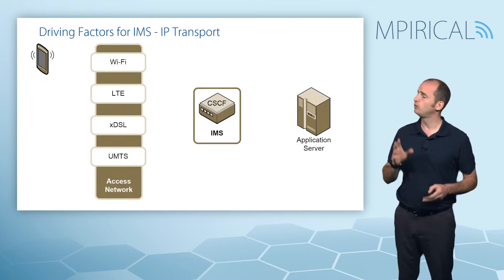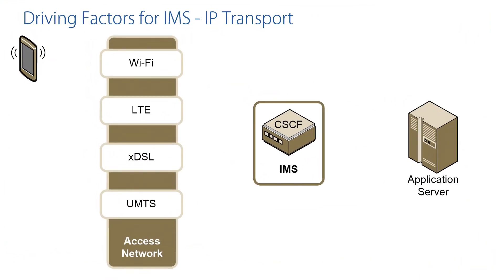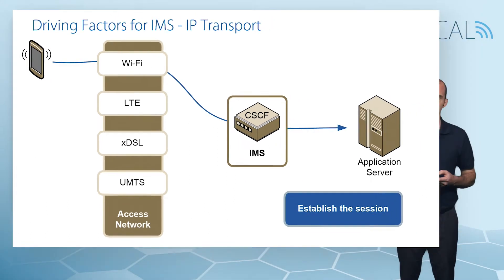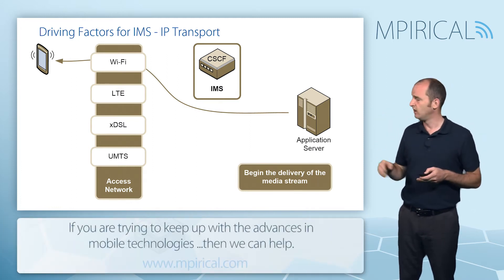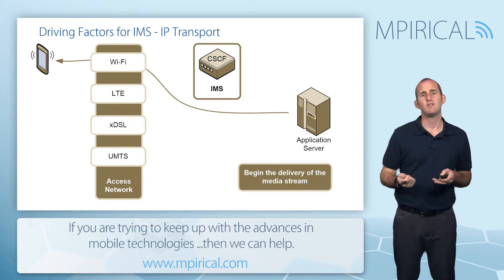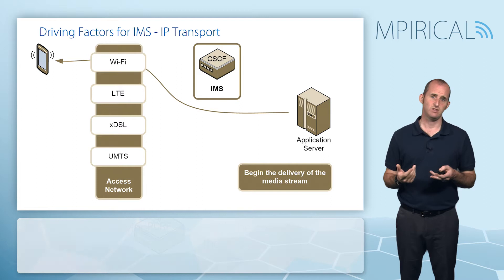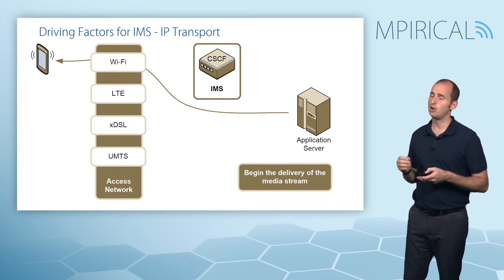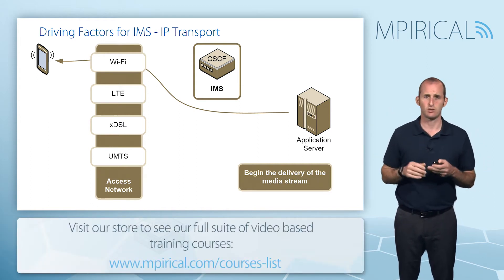A second driver is the whole notion of IP transport, which is essentially what the IMS is based on. In this particular diagram we can see that a particular subscriber has started off a session on Wi-Fi. So that session is being delivered — whatever media might be associated with the session is being delivered across a Wi-Fi access network. Now remember the IMS is IP connectivity access network agnostic. So we could start a session off on Wi-Fi, and notice that at this point the resultant media is not actually flowing through our IMS.